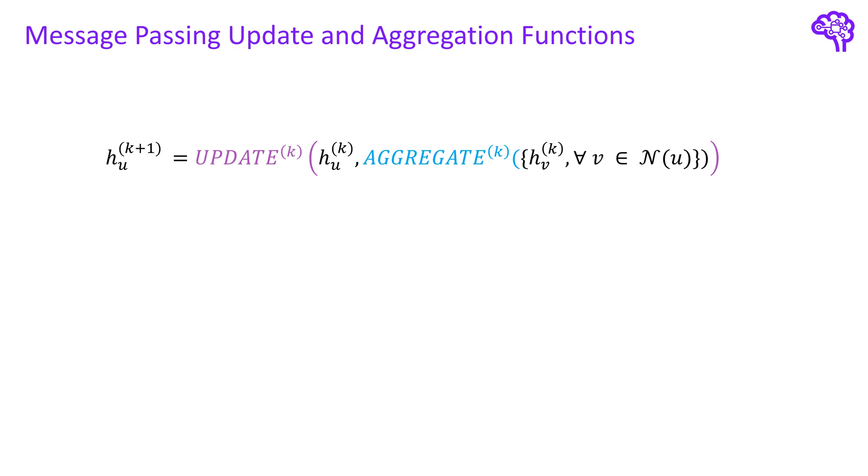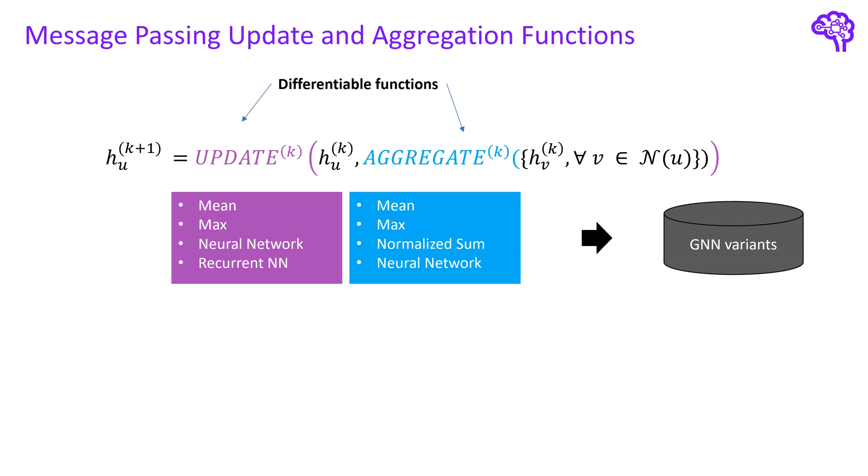This basic formula stays the same for all variants of message passing graph neural networks. The only thing in which they are different is how they perform the update and aggregate functions. Many different operations have already been published in literature and besides simple mean or max operations there are more advanced methods like recurrent neural networks.